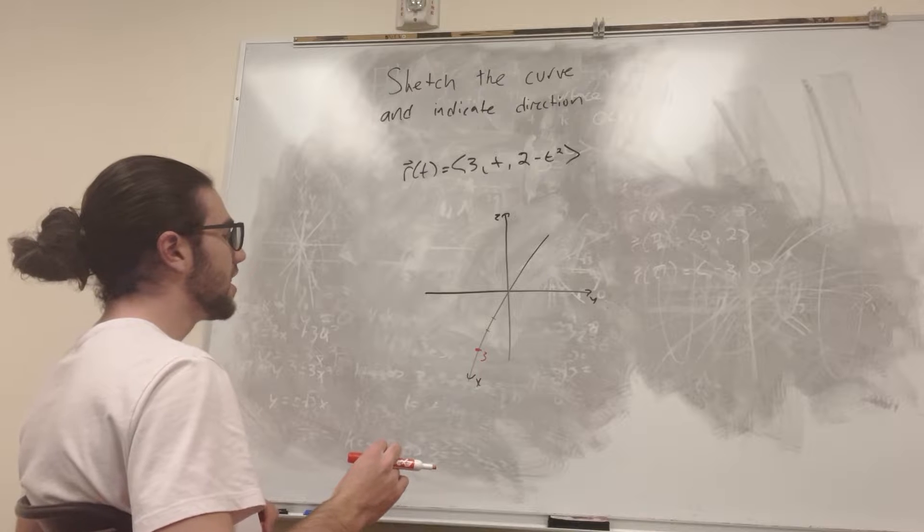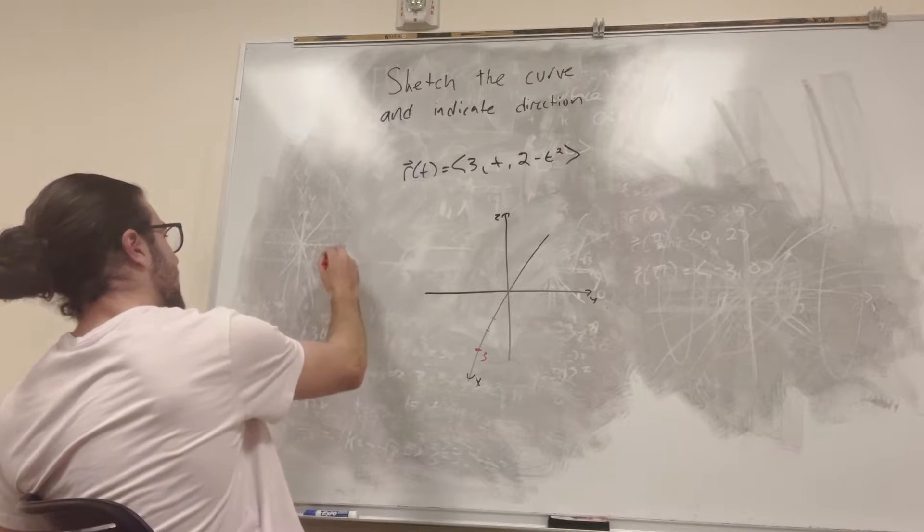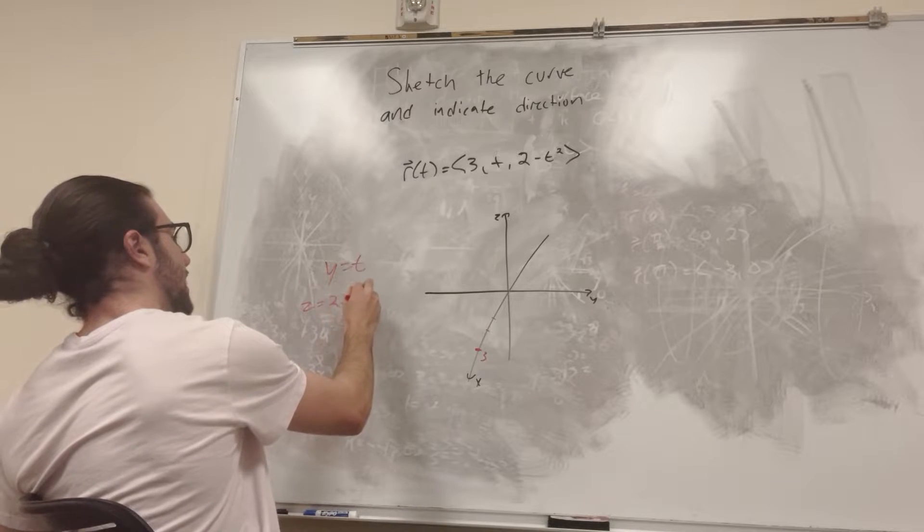So we have y is equal to t, and then z is equal to 2 minus t squared. Let's write that down: y equals t, z equals 2 minus t squared.